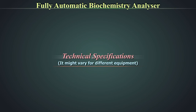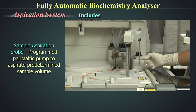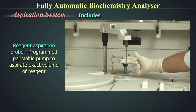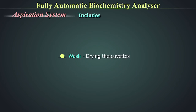Let us first understand the important technical systems of a biochemistry autoanalyzer. The aspiration system includes a sample aspiration probe with a programmed peristaltic pump to aspirate a predetermined sample volume, a reagent aspiration probe with a programmed peristaltic pump to aspirate an exact volume of reagent, wash nozzles for flow cell wash after every test sample, and air wash for drying the cuvettes after each sample.